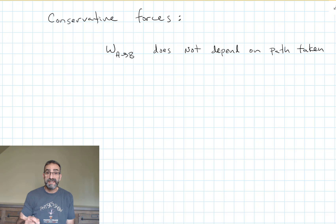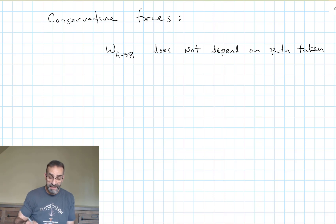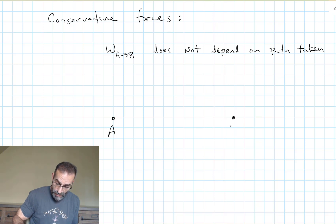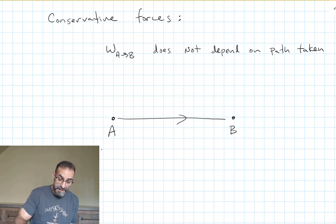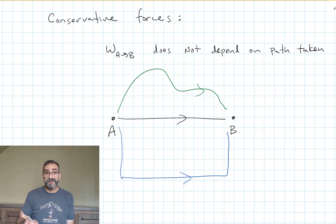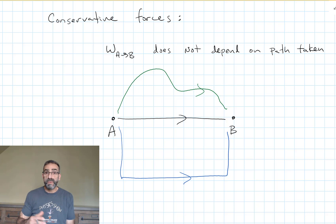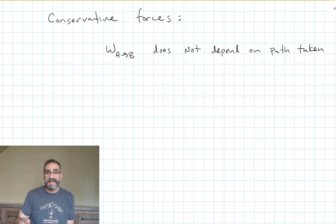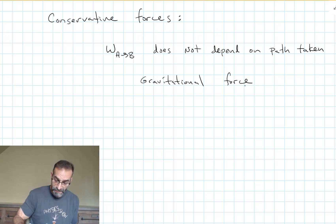One last topic with work is whether a force is conservative or non-conservative. For a conservative force, the work done from point A to point B is independent of the path taken — whether you take a straight line or a longer winding path, the work is the same. For a non-conservative force like friction, the work done depends on the path. The conservative forces from mechanics were the gravitational force and the spring force.